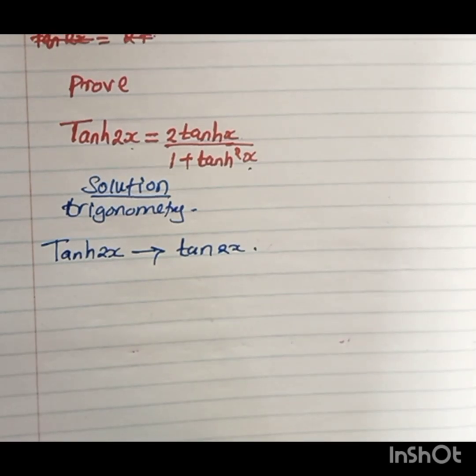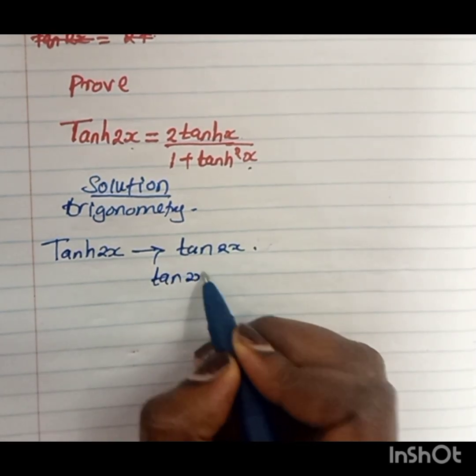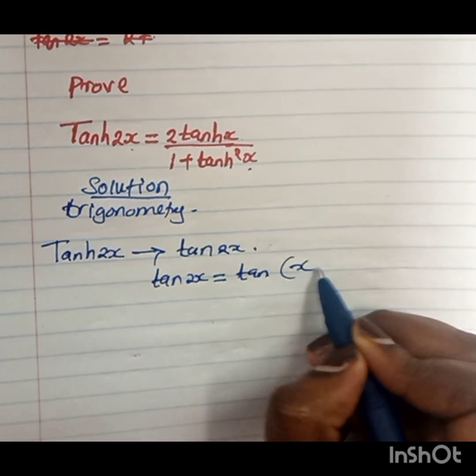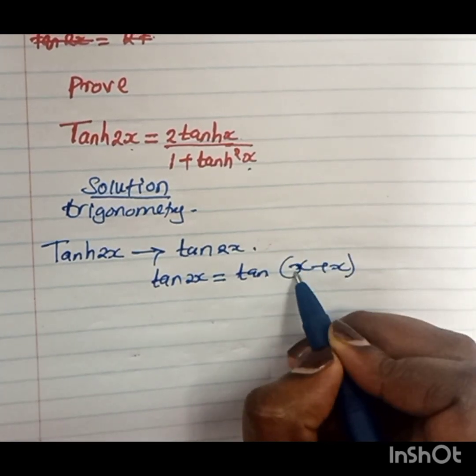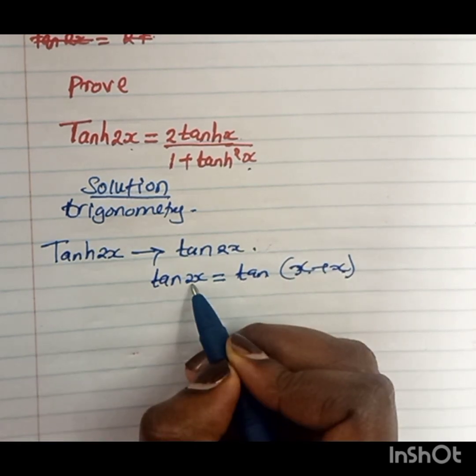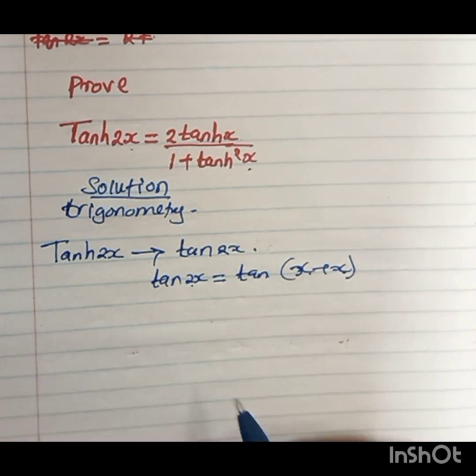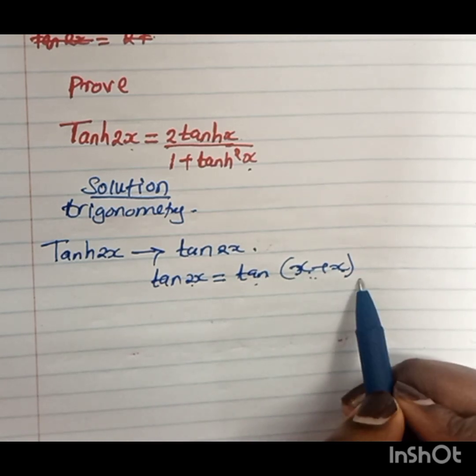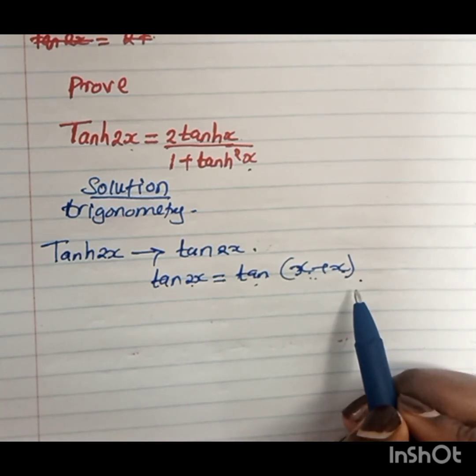We know that this tan 2x is the same as tan(x+x) because x plus x gives me 2x. So we are going to expand tan(x+x). Then the answer we get will be in trigonometry, and we will convert it back to hyperbolic using Osborne's rule.